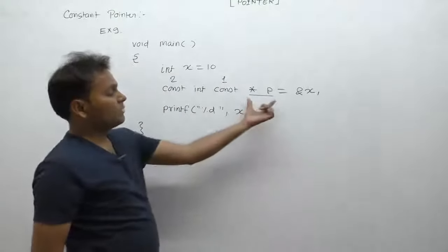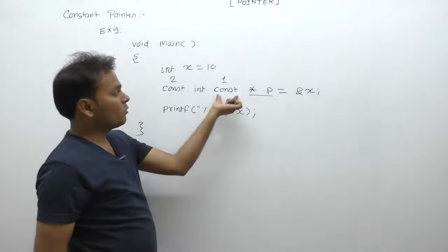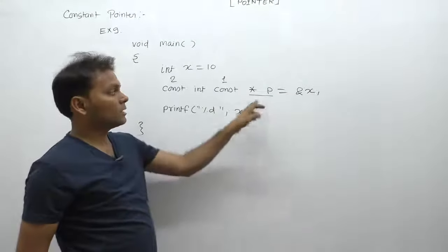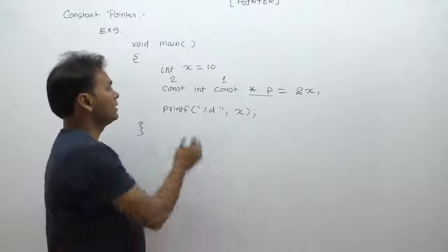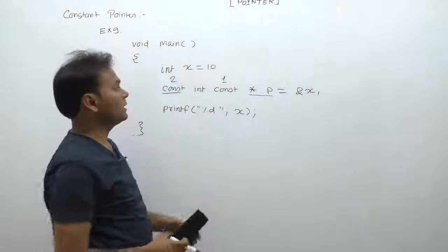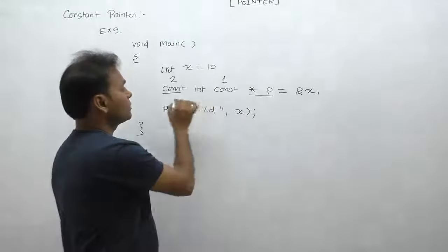The first const keyword makes the star p location constant. The same with the second const - it appears just before p, or before star p. That's why again star p is a constant, meaning the star p location is constant.